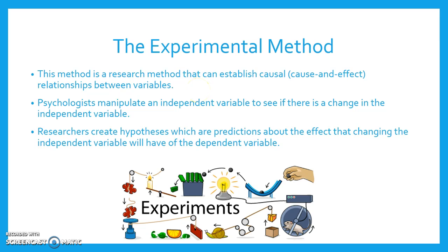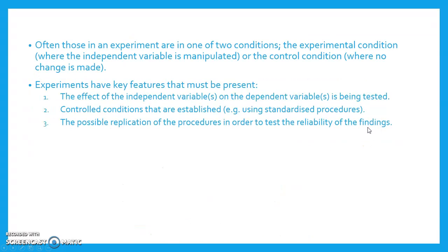Psychologists manipulate an independent variable to see if there is a change in the dependent variable. Researchers can create hypotheses, which are predictions about the effect that changing the independent variable will have on the dependent variable. Often those in an experiment are in one of two conditions: the experimental condition, where the independent variable is manipulated, or the control condition, where no change is made.